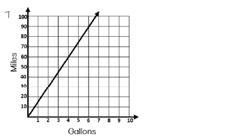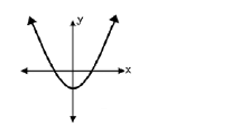For number seven, that is a perfectly straight line. There are no curves, no bumps, no changes, and so it is a linear graph. For number eight, it is a curved graph, so it is nonlinear — not a straight line.